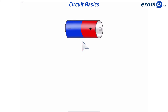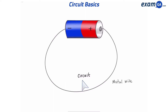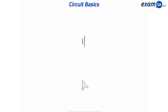A cell has a positive side and a negative side. If I connect a metal wire from one side to the other, I have created a circuit. This is commonly drawn like this — here's our cell.